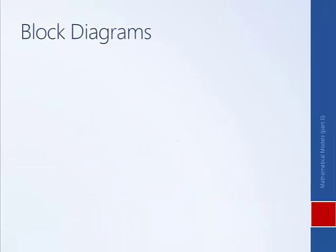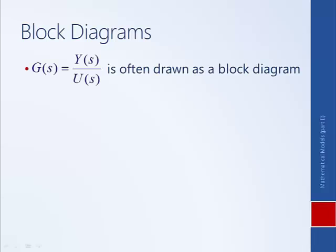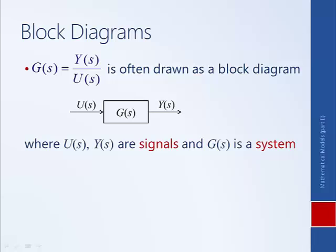Another important form of model is a block diagram. Often a transfer function can be represented as a block diagram, where G(s) is our system represented as a block. U(s) and Y(s) are signals: U(s) is the input and Y(s) is the output. For example, G(s) could be a drive line where the input is torque applied to one end and Y(s) is the angular twist in the drive line.